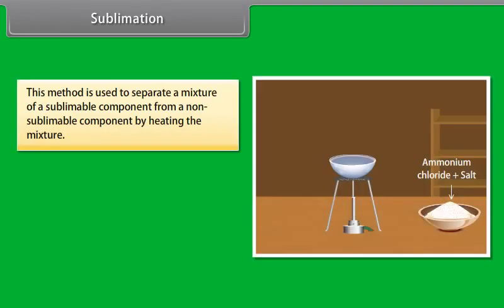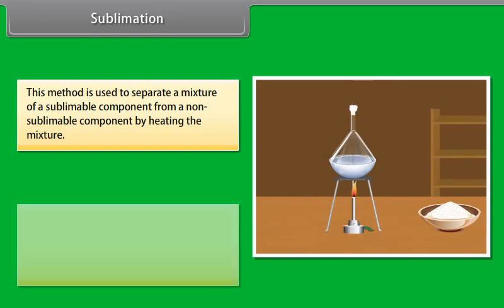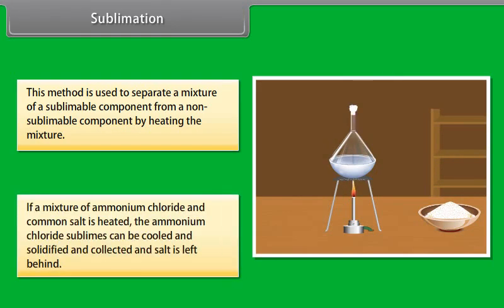Sublimation. This method is used to separate a mixture of sublimable component from a non-sublimable component by heating the mixture. If a mixture of ammonium chloride and common salt is heated, the ammonium chloride sublimes, can be cooled and solidified and collected, and salt is left behind.